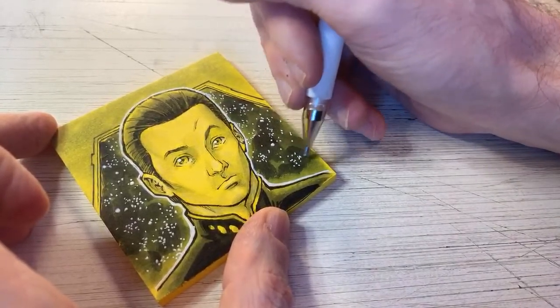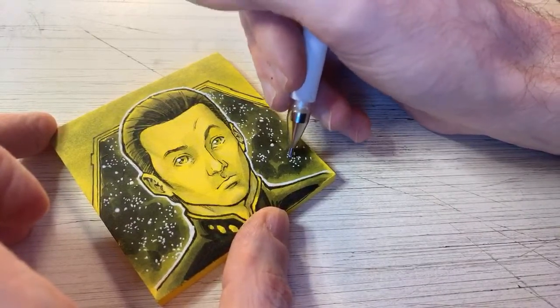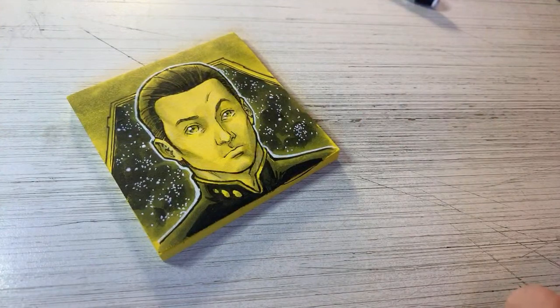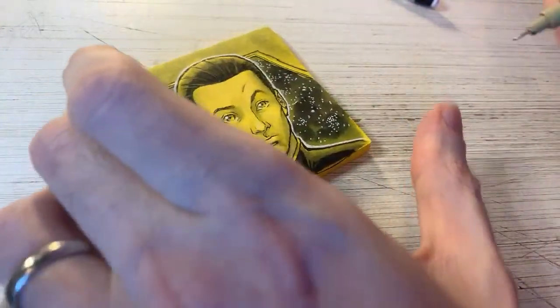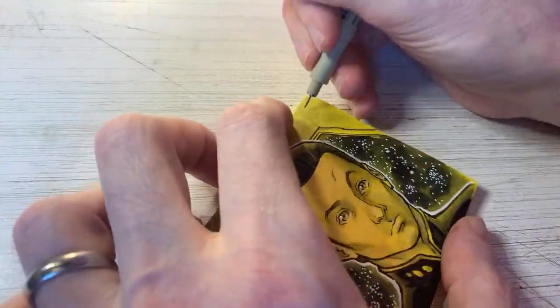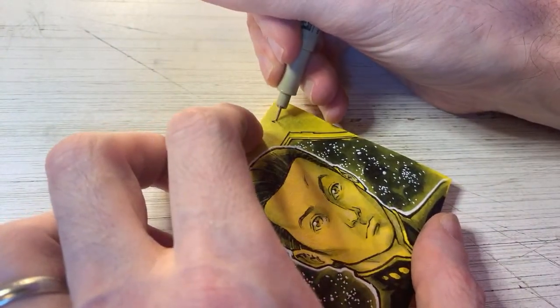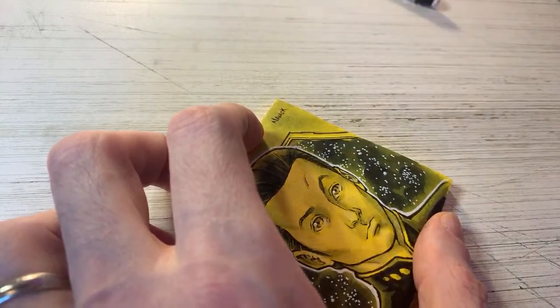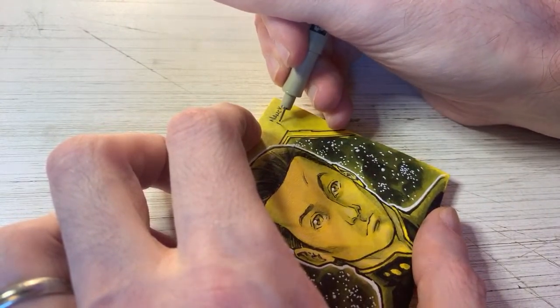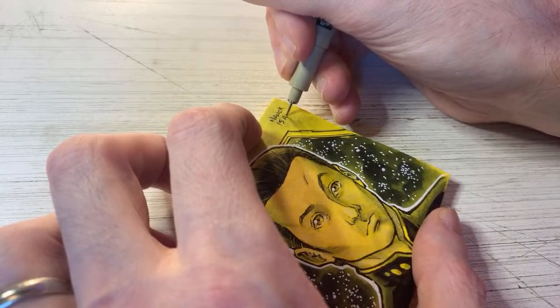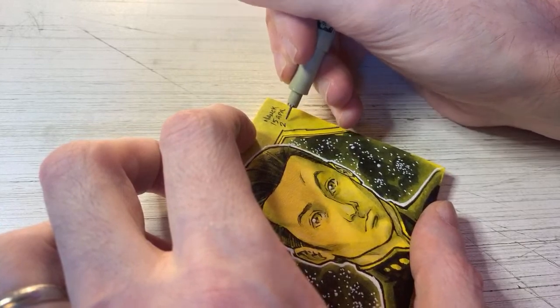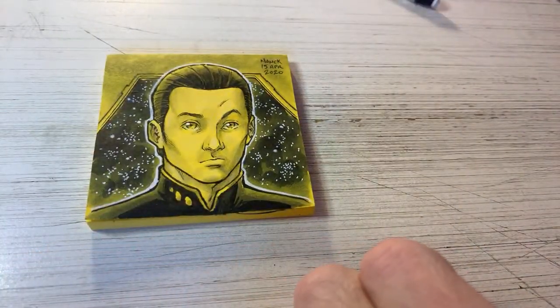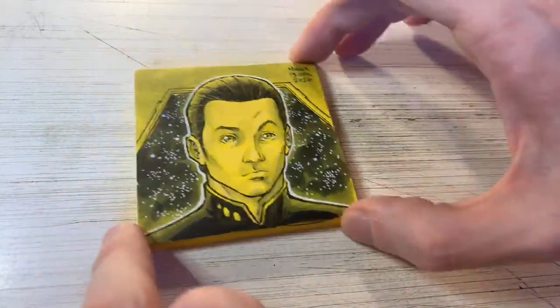Just a few more stars. There we go. Final front here right behind him there. And now to add my signature to this. It looks like it only is up here in this part of the wall. We'll just go right up in this corner here. And today is the 15th of April, 2020. And there we go, there's Data from Star Trek Next Generation, or at least my comic book style rendition of Data on a Post-it note.